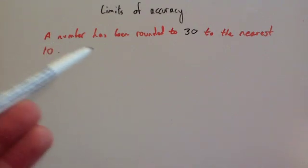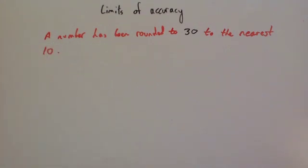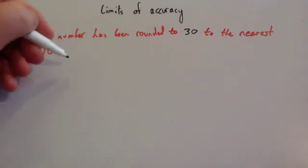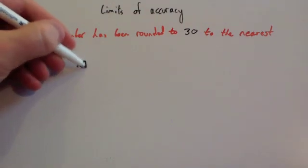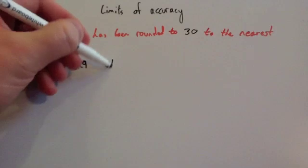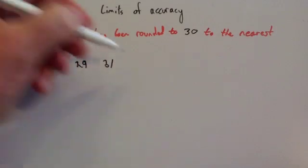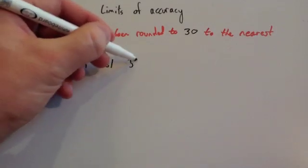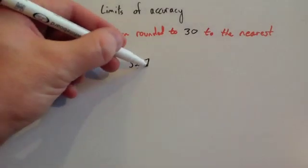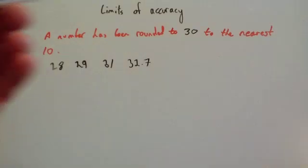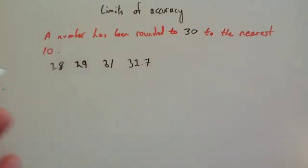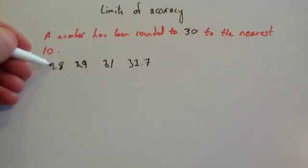A number has been rounded to 30 to the nearest 10. Let's consider some values that it could be. It could be something like 29, it could be 31, it could be 28, it could be 32.7, and so on. There are lots of different values that would round to 30 to the nearest 10.